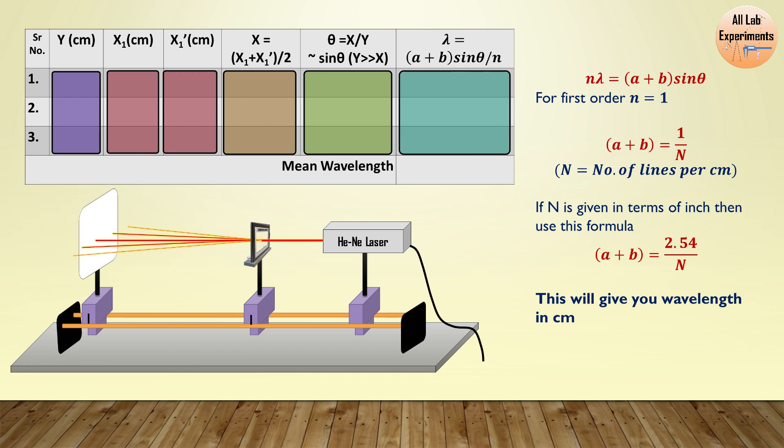but in the units of centimeter. You can further change this to nanometer or angstrom whatever you like. You can perform this experiment for three different values of Y and finally take a mean of the wavelengths calculated using this grating formula.